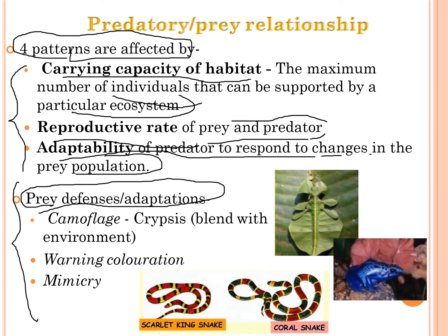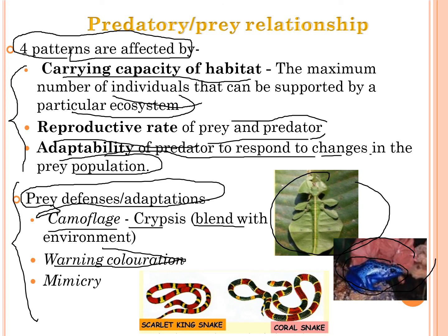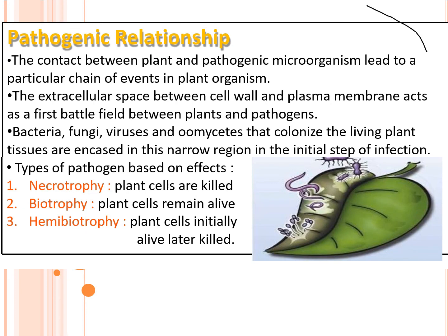Prey defense adaptations include camouflage or change of color to blend with the environment, so predators cannot distinguish the prey from surroundings. There are also warning colorations — for example, the bright colors of a frog that signal danger to predators. Mimicry is another defense, where animals create sounds or appearances for their safety.